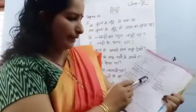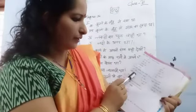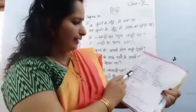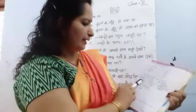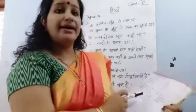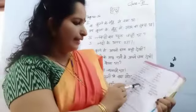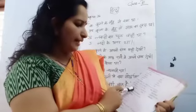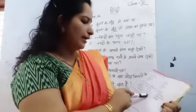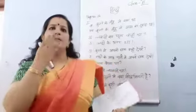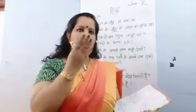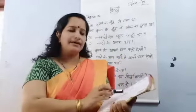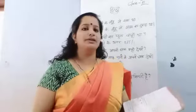Kutte ne paani mein apni chaya dhekhi. Kutte ne bhauntha rakh gaya. Third one — nadhi par lakdi ka pultha, there was a wooden bridge on the river. Last one — usne apna mugh kola, he opened his mouth. This is the correct answer — sahi shabd chungar lakhe.